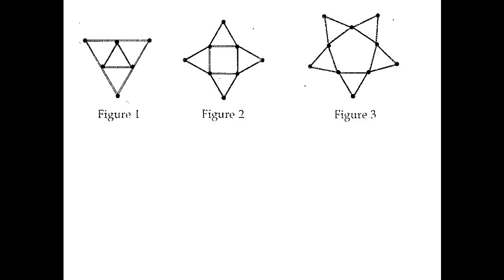Following this pattern, the next figure will have a hexagon, and from each side of the hexagon another triangle is drawn. Since there are 6 triangles, the total number of sticks is 6 × 3 = 18. So 18 sticks are needed to make the next figure.